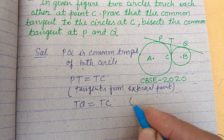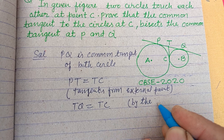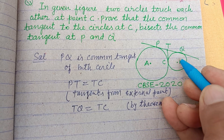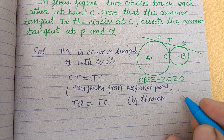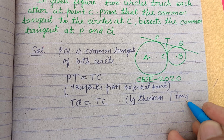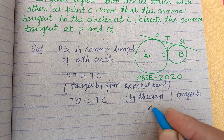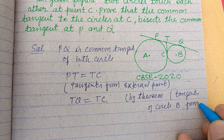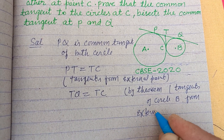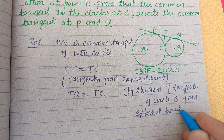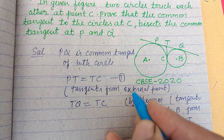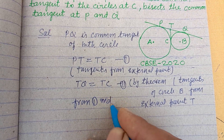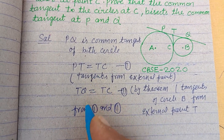Similarly, TQ equals TC by the same theorem, because T is an external point and TQ and TC are two tangents drawn to circle B from external point T.